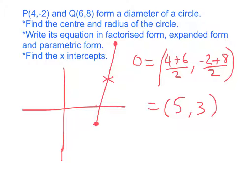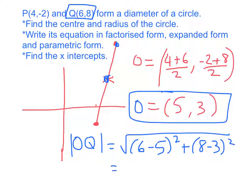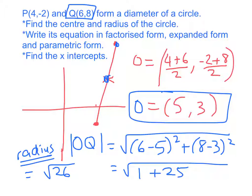Now we need to figure out the radius. Two ways to do this. First way is that now that we've got the centre, we can just work out the distance between two points. So I'll do the distance from O to Q. So using Pythagoras, it's going to be 6 minus 5 squared plus 8 minus 3 squared, which is equal to the square root of 1 plus 25, which is root 26. So the radius is equal to the square root of 26.